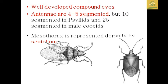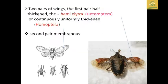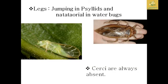Antennae are 10-segmented in psyllids and 25-segmented in male coccids. The mesonotum is represented dorsally by the scutellum — the triangle-shaped plate on the insect body. They have two pairs of wings: the first pair is half-thickened hemilytra, known as Heteroptera, or uniformly thickened, known as Homoptera. The second pair is membranous. Legs are used for jumping in psyllids and natatorial in water bugs.